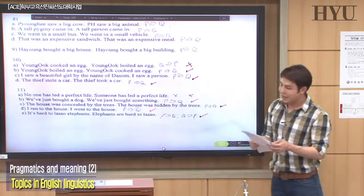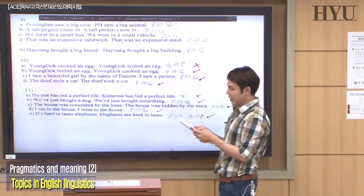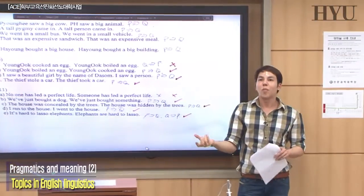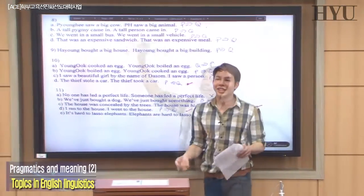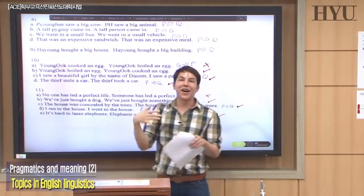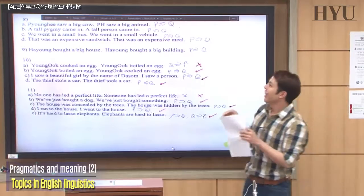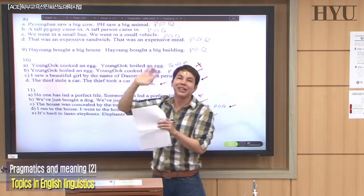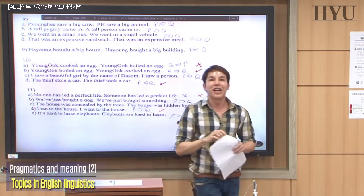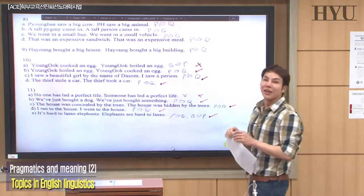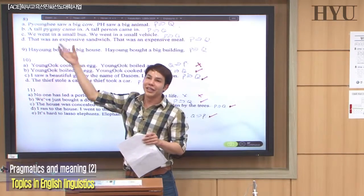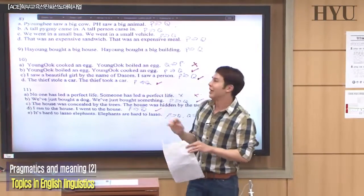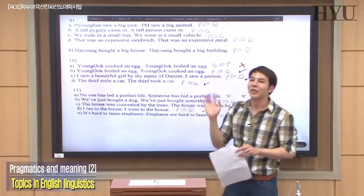'A tall pygmy came in' and 'a tall person came in.' A pygmy is like a hobbit. So does it mean that a tall pygmy is a tall person? No, not necessarily — even though he's tall, he could still be a pygmy in comparison to a taller, normal person. So no entailment there.